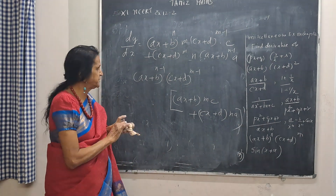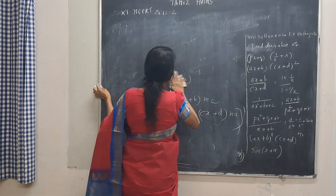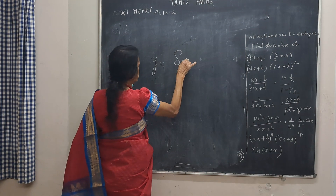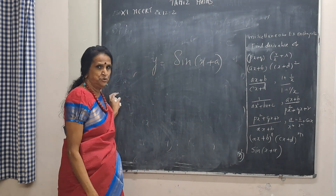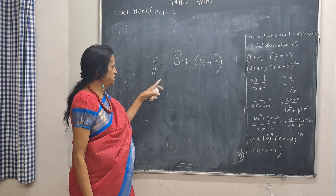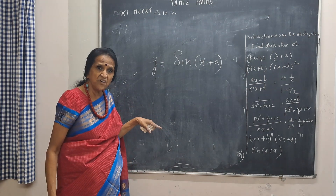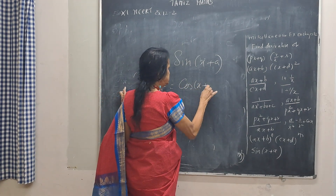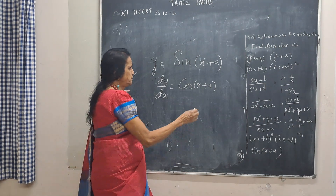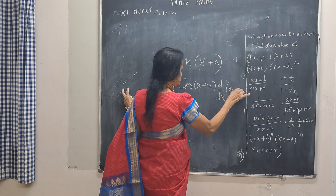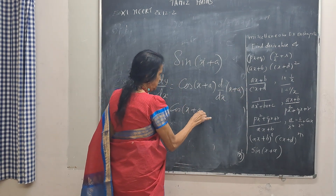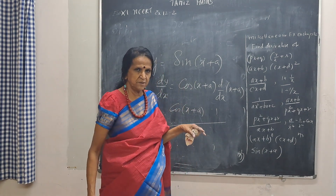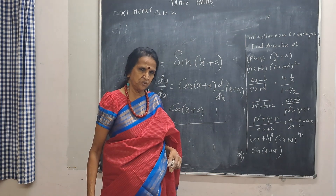Last question: sin(x + a). Simple chain rule. The main function is sin, whose derivative is cos. So dy/dx equals cos(x + a) times derivative of (x + a), which is 1. So the answer is cos(x + a). This completes our miscellaneous section of Chapter 12, and we will continue in the next video with more questions from this exercise.